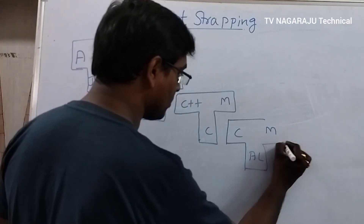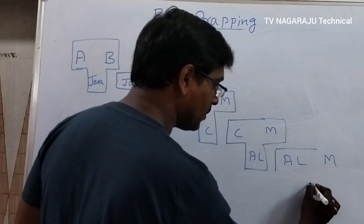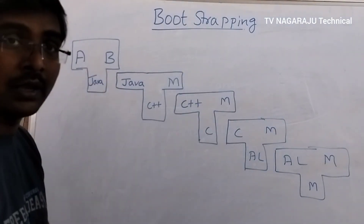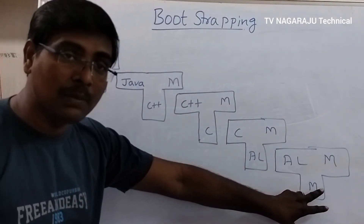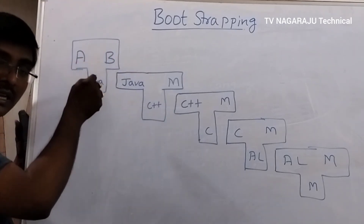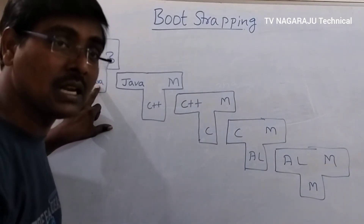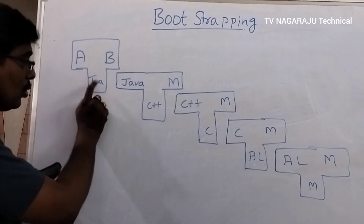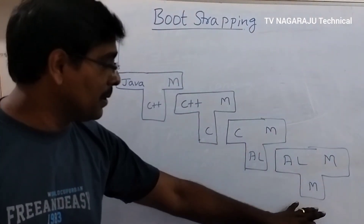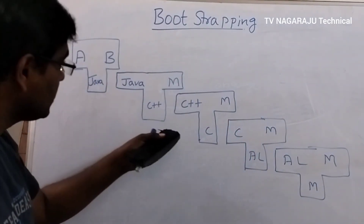Suppose C is the source language, M is the machine language, and AL is the assembly language used for implementing. Finally, M is the machine language. The computer can understand only machine language. A compiler translates from one programming language to another, but if the implementation language is not understandable by the machine, you have to convert it in a single step or multiple steps. The order is not important.